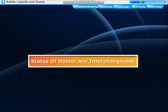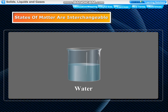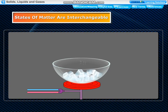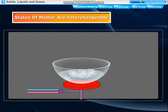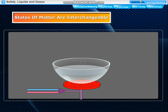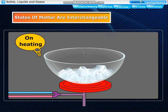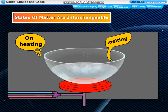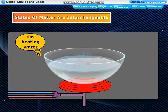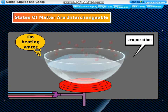States of matter are interchangeable. Matter can change from one state to another. For example, the states of water are interchangeable. Heating makes the molecules move apart and become less closely packed, while cooling makes the molecules come closer and become more closely packed. On heating, ice (solid) changes into water (liquid) — this is called melting. On heating, water (liquid) changes into steam (gas) — this is called evaporation.